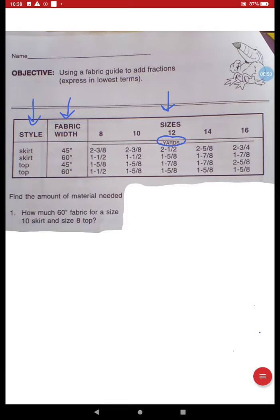So the first question asks us how much 60 inch fabric for a size 10 skirt and a size 8 top. So let's look at the t-chart. 60 inch fabric for a skirt, for what size skirt? Size 10 skirt. So I go to where 10 and 60 intercede or intercept and I've got one and a half. Let's write that down, one and one half. Okay, so that's a size 10 skirt. Now let's go to the size 8 top. Top, 60 inch, 8, and where do they intersect? It's also one and a half yards of fabric. Let's write that down.